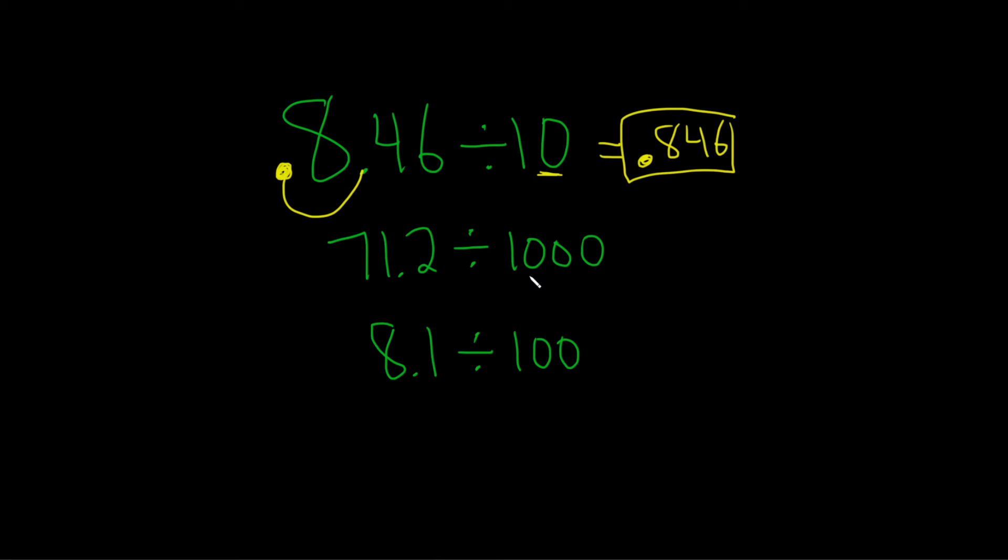Here, in the second example, we have three zeros. One, two, three. So in this case, we go left three times. One, two, three. And you put a zero there. So this is .0712.